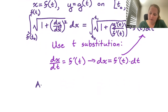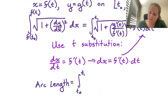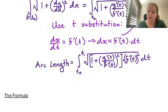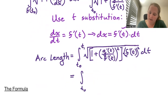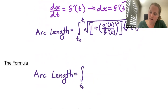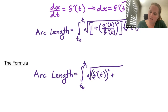Therefore, our arc length is the definite integral from t0 to t1 of the square root of 1 plus g prime of t over f prime of t squared, and pulling f prime of t inside the square root gives f prime of t squared, so the integrand becomes the square root of f prime of t squared plus g prime of t squared, dt.